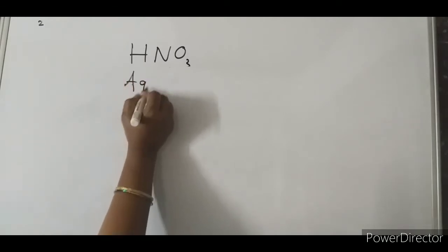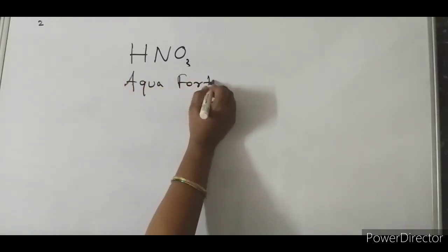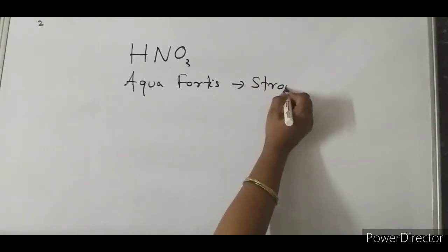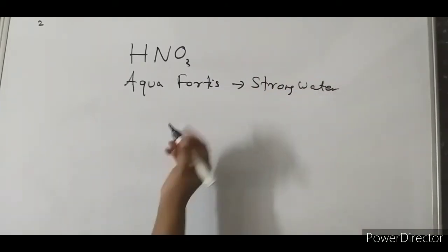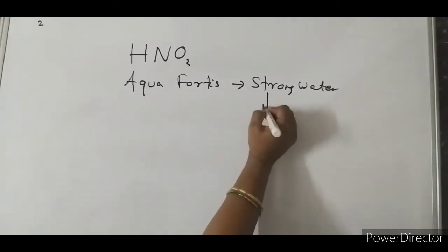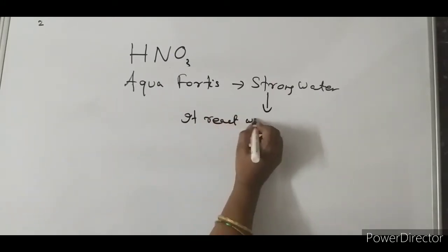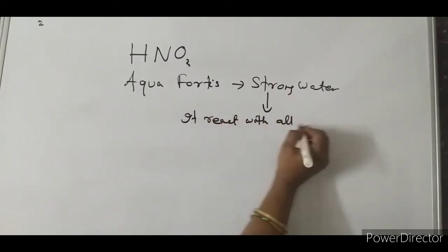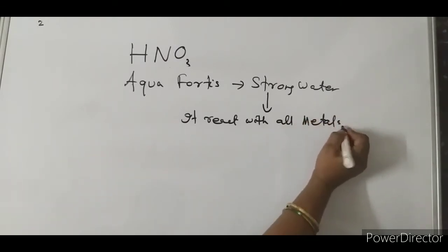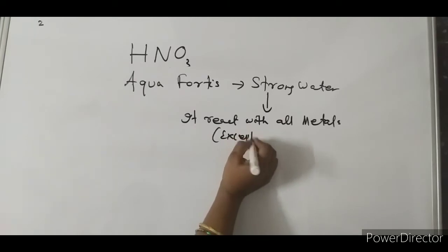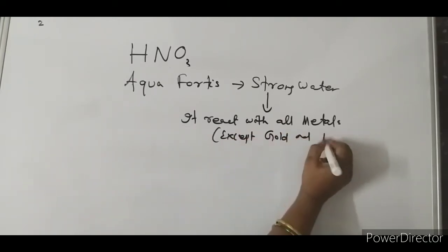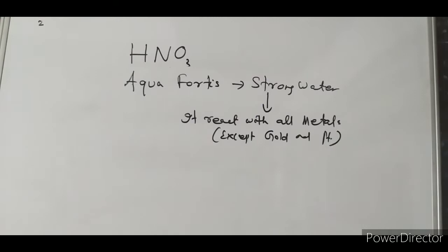HNO3 is also known as aqua fortis, which means strong water. It is called strong water because it reacts with all metals except gold and platinum. It even dissolves silver.